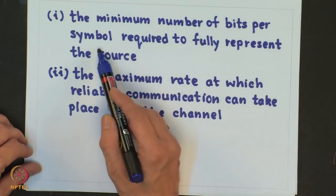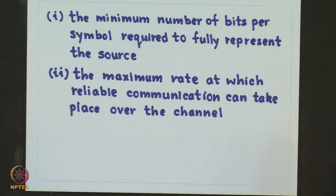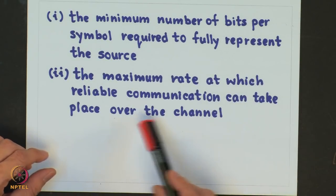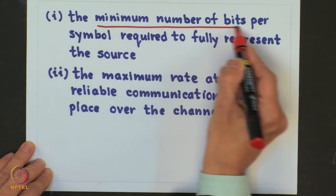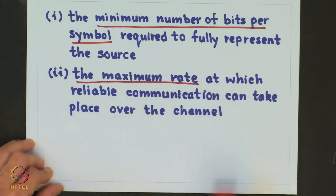Given an information source and a noisy channel, information theory provides limits on: one, the minimum number of bits per symbol required to fully represent the source, and two, the maximum rate at which reliable communication can take place over the channel. In the context of communication, information theory deals with mathematical modeling and analysis of a communication system rather than physical sources and physical channels. Let us look at the mathematical models for information sources.